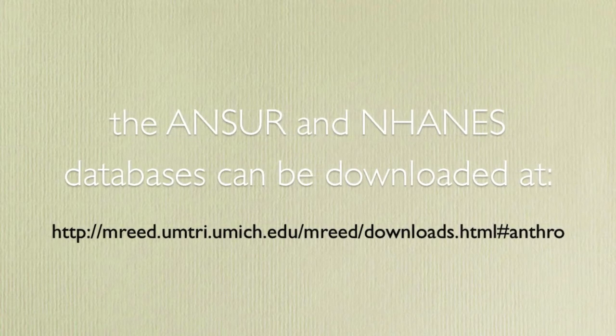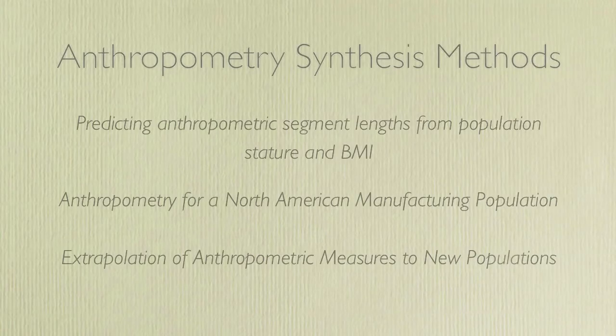Using these methods, it's possible to create a realistic population with a level of variability that may be found in your target population. The ANSWER and NHANES databases can both be found online. A link to a worksheet with a step-by-step mathematical description of these methods is also provided in the video information. There are more advanced techniques that can be used to consider the relationships between the anthropometry sections. If you would like to learn more about anthropometry synthesis methods, please check out the following papers, which can be found at the Open Design Lab website.